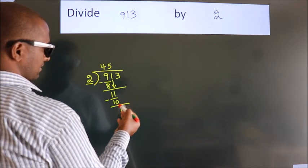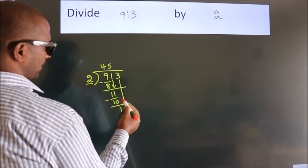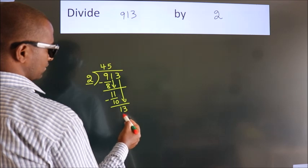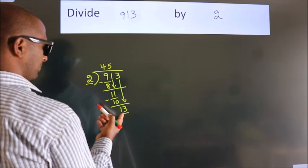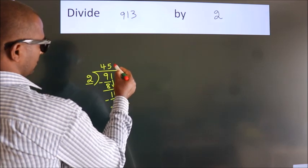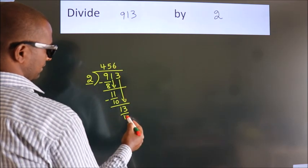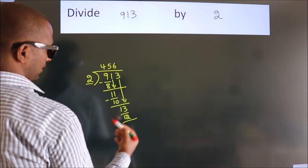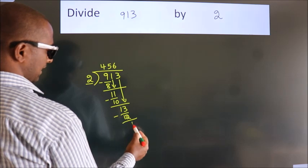After this, bring down the beside number. So 3 down. So 13. A number close to 13 in 2 table is 2 times 6 equals 12. Now we subtract. We get 1.